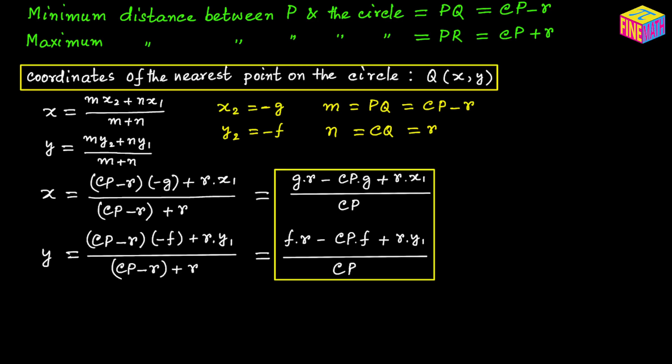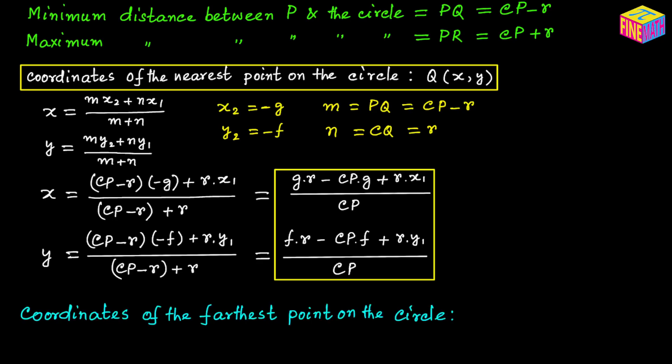Next, let's talk about how to find the coordinates of the farthest point on the circle from point P. From the diagram, that farthest point is R, whose coordinates are (x₂, y₂). We can use the section formula for this as well. I am going to leave that for you to try.